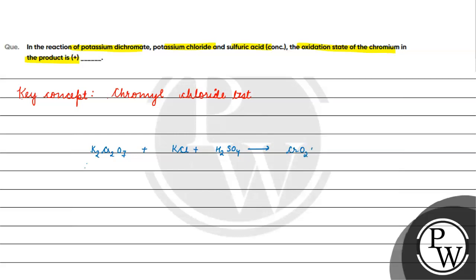In this reaction the product formed is CrO2Cl2, potassium hydrogen sulfate, and water. If we want to write the balanced reaction: